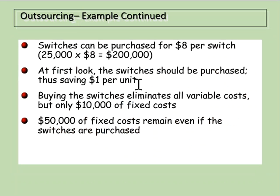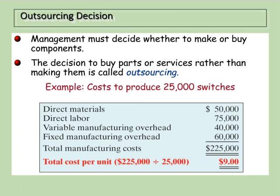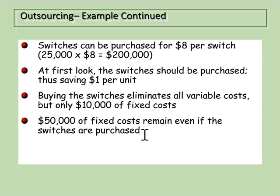Another company will make the switches for them at eight dollars per switch. It's costing us nine and we can buy them at eight — that seems like a good deal, saving one dollar per unit. However, if we buy the switches externally, all the variable costs will be eliminated but only ten percent of the fixed costs. Fixed costs were $60,000, meaning we retain $50,000 worth of fixed costs even if we purchase externally.